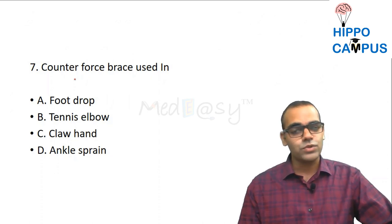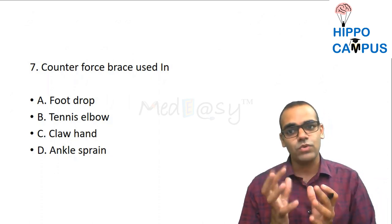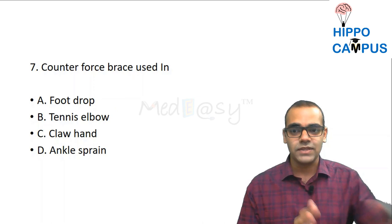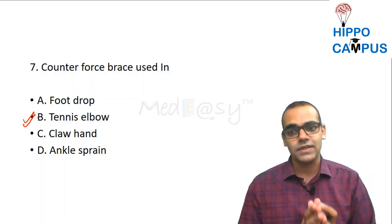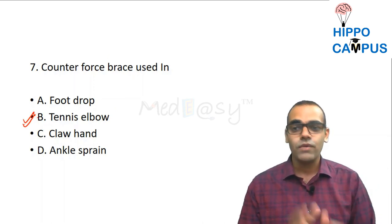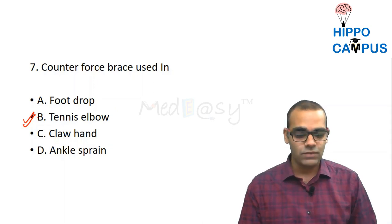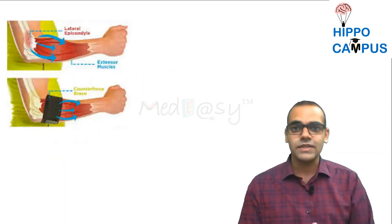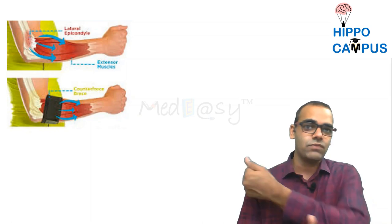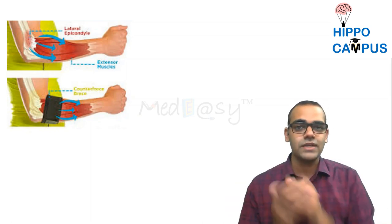Question 7: Counter force brace is used in which condition? The answer is tennis elbow (lateral epicondylitis). In tennis elbow, we use a counter force brace. The extensor group of muscles originates at the lateral epicondyle, and overuse of these muscles causes inflammation at the attachment site.